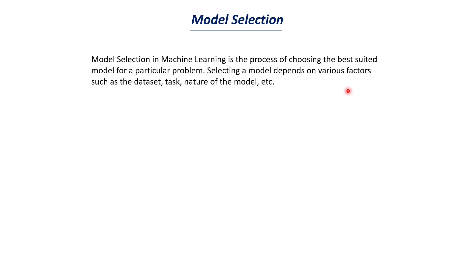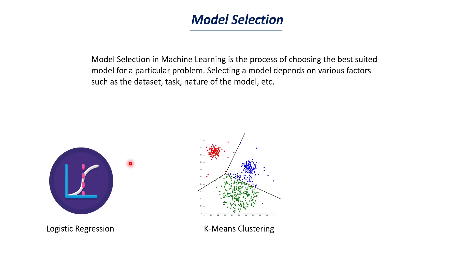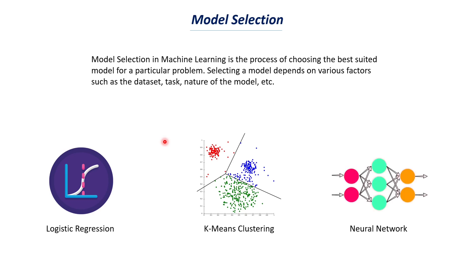In machine learning, we have lots of models. For example, we have logistic regression, which is an example of a supervised machine learning model. Then we have k-means clustering, which is an example of an unsupervised learning model. We also have many different types of neural networks, which come under deep learning. Similarly, we have other models such as support vector machines, hierarchical clustering, random forest, and so on. We need to decide which model to use for which project — that question is answered by model selection.